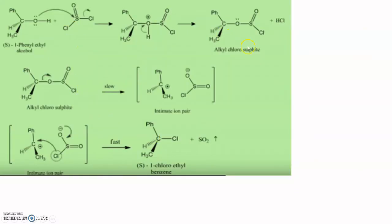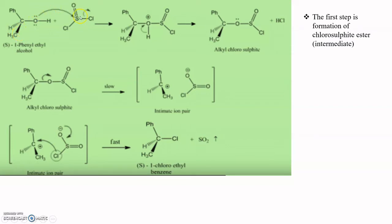In the first step of SNI mechanism, an alkyl chlorosulphite is formed. The S-alcohol — S-phenyl ethyl alcohol — reacts with SOCl2 (thionyl chloride), forming an intermediate with a positive charge on the oxygen. One chloride is lost from thionyl chloride when the oxygen attacks the sulfur; that chloride ion then abstracts the proton, HCl is formed, and the alkyl chlorosulphite intermediate is produced.